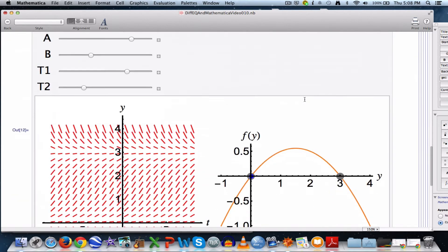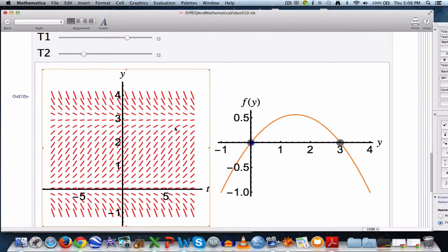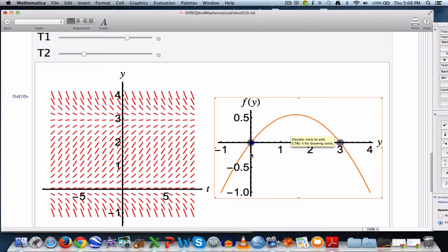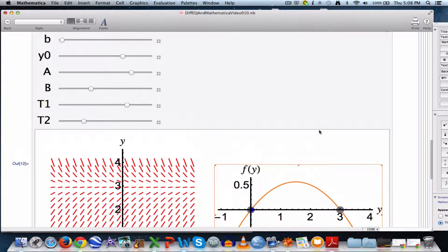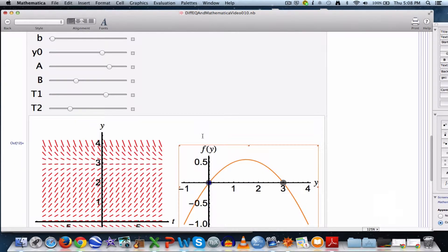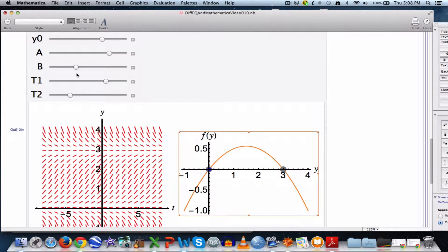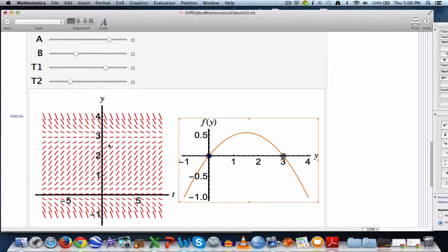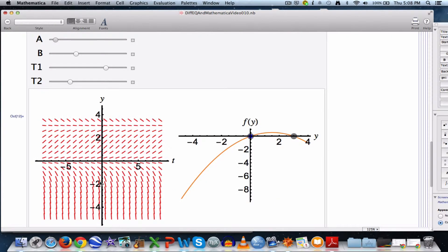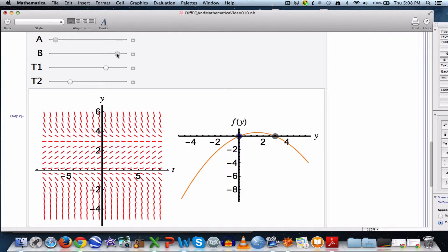All right, let's look at the picture here. We've got the slope field on the left, and we've got the graph of the f of y function on the right, which is a quadratic function with a negative y squared coefficient, so it opens downward. How is this code flexible? Well, one element of flexibility that I put in here is the a, b, t1, and t2. a is the left endpoint for the y interval, which is vertical on the graph on the left and horizontal on the graph on the right. I can make that smaller, for example.